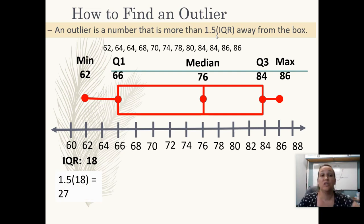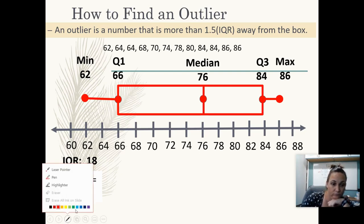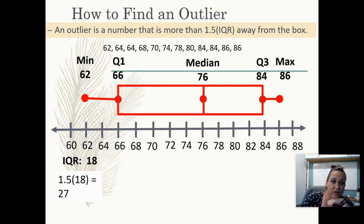All right, so an outlier is any number that is more than 1.5 times my interquartile range away from the edges of the box. So now I just discovered that 1.5 times the interquartile range is 27. So what that means is if I start at quartile one and I go backwards 27 numbers...